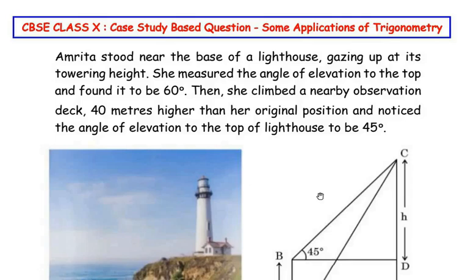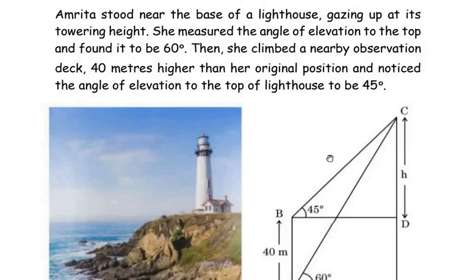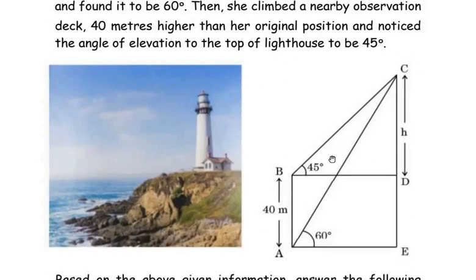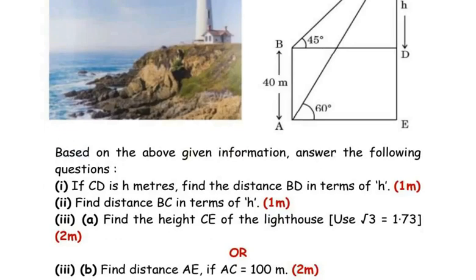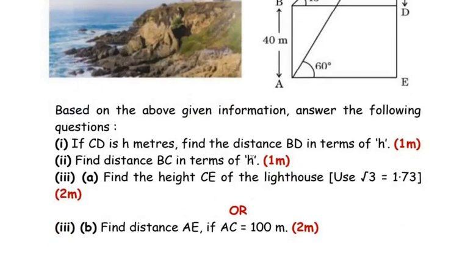Hello and welcome to my channel. In this video we are going to solve a case study based question from the Some Applications of Trigonometry chapter which appeared in the CBSE board exam 2025. This question has three sub-questions. The first and second sub-questions are for one mark and the third sub-question is for two marks, and it has an OR question as well — either you can attempt the A question or the B question. Let us start with the first sub-question.